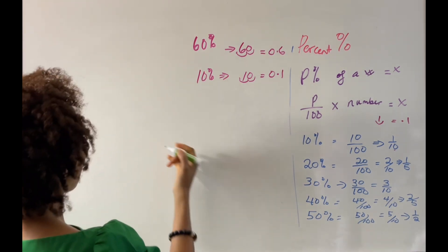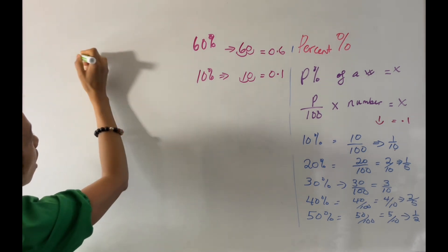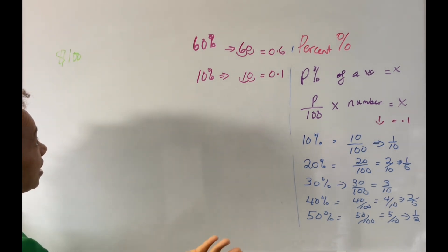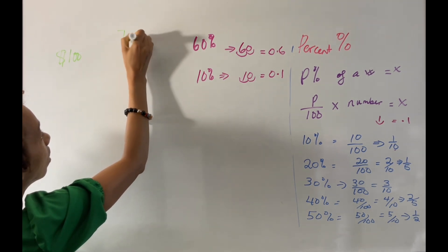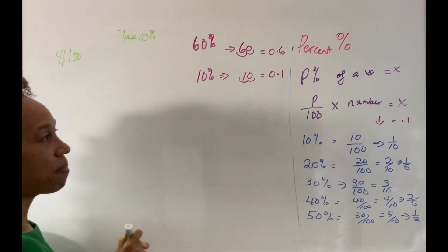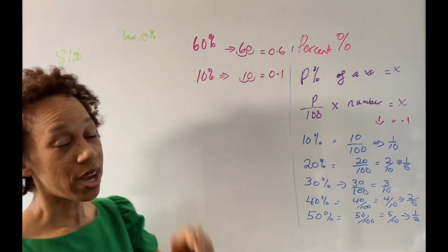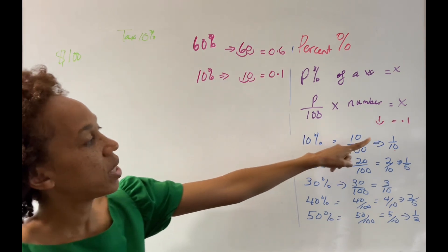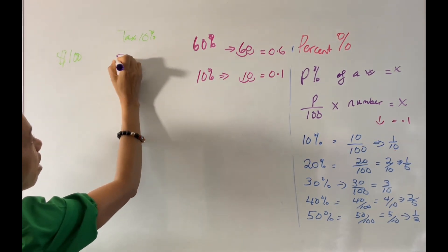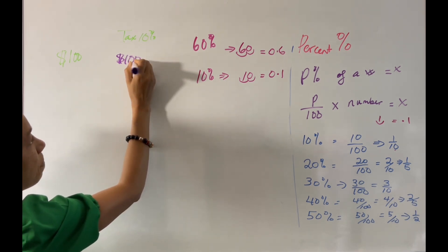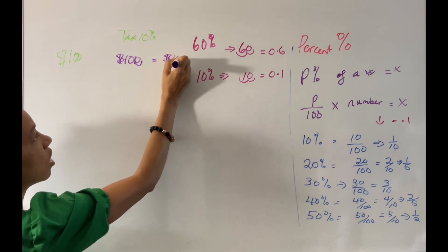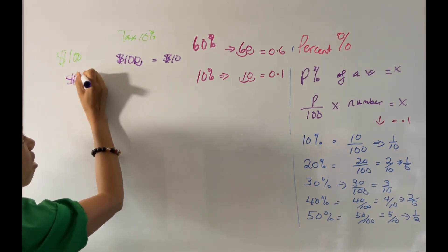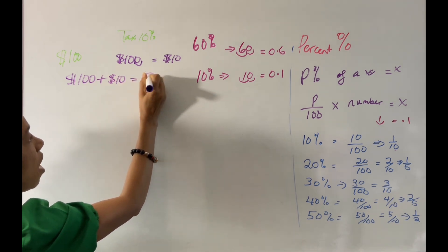Say you are buying a dress that costs $100 and you have to pay a sales tax of 10%. We know that 10% means moving one decimal place over. Take the $100 and move one space over: that gives you $10. So off the top, you know $10 is added in tax. Your total is $100 plus $10, which is $110.